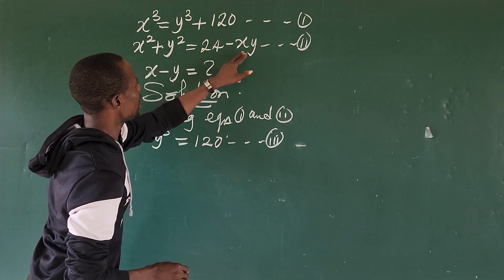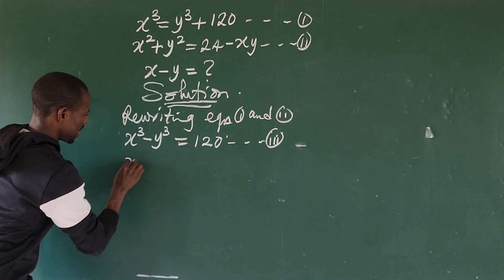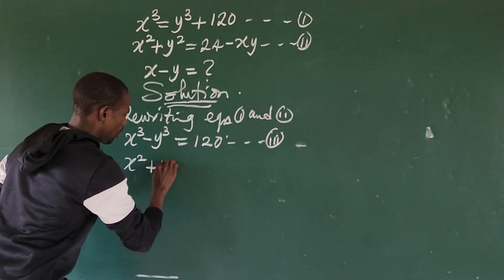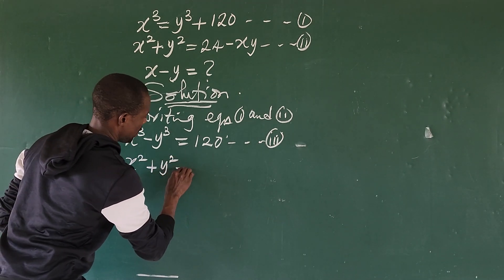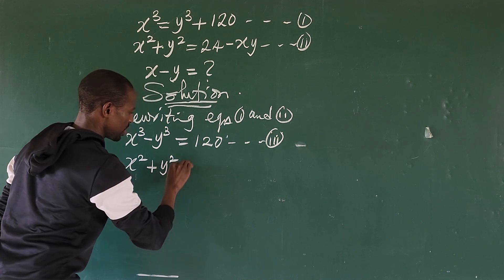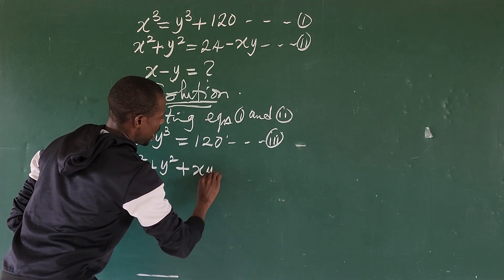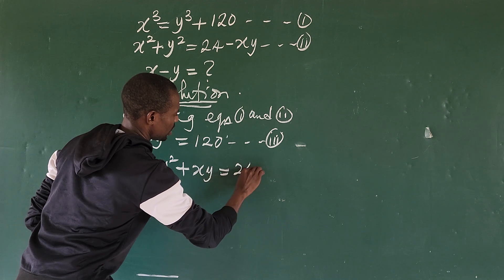Let's move this to this side to give us x² plus y². This is minus, so we get x² + y² + xy = 24. Let's give this equation four.